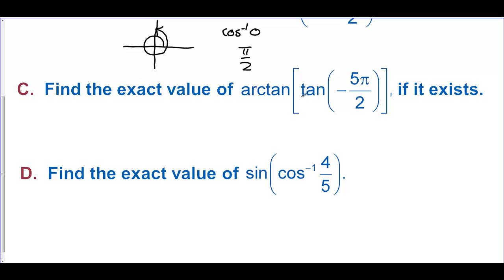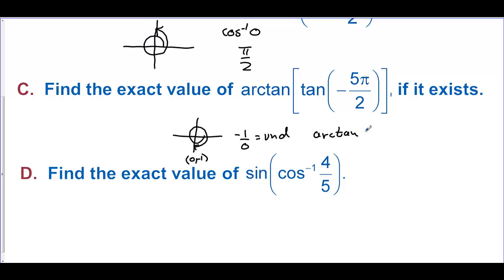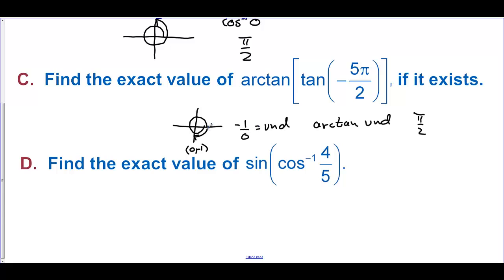Find the exact value of arctangent of tangent of negative 5 pi over 2. Counting around, negative 5 pi over 2 lands at negative pi over 2. The point there is 0, negative 1. Tangent is sine over cosine, and with cosine equal to 0 this is undefined. So we want arctangent of undefined — where is tangent undefined? Tangent is undefined at both negative pi over 2 and pi over 2, but the principal value answer for arctangent is pi over 2.